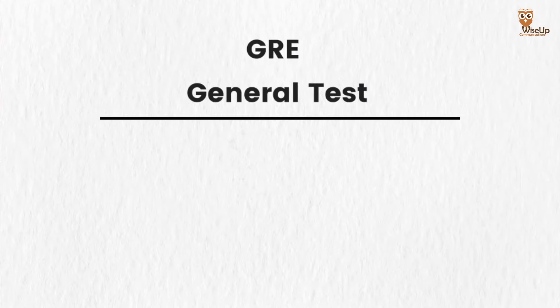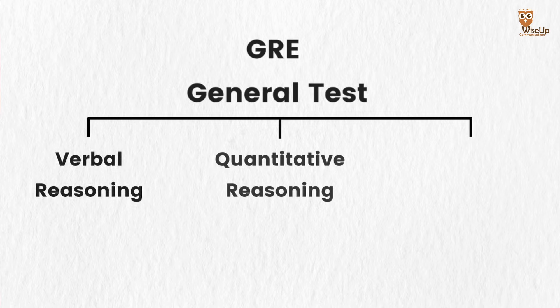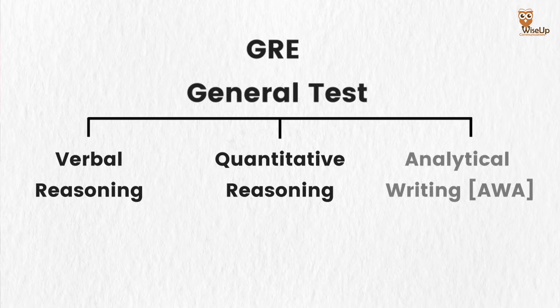For those of you who are new to this exam format, the GRE General Test consists of three sections: Verbal Reasoning, Quantitative Reasoning, and the Analytical Writing section.